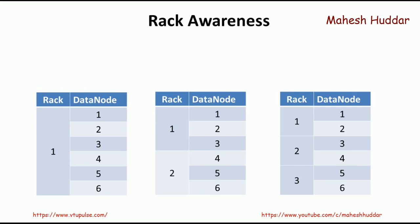In the first example, there are six Data Nodes, all put into one Rack. In the second example, three Data Nodes are in the first Rack and the remaining three are in another Rack — two groups of Data Nodes. In the third example, six Data Nodes are divided into three groups with two Data Nodes each, giving three Racks.